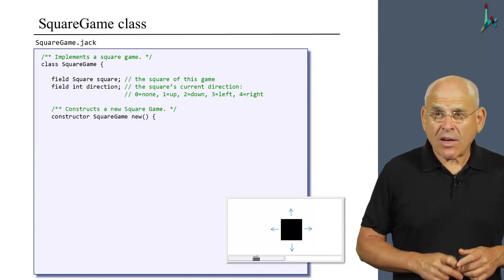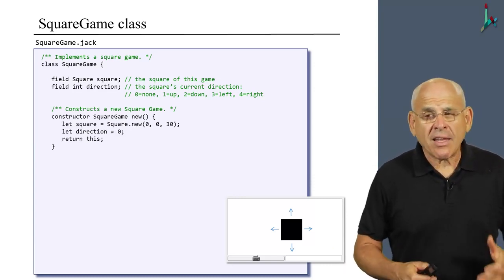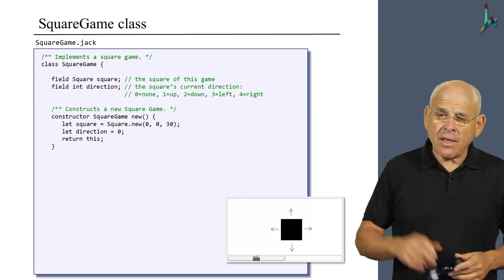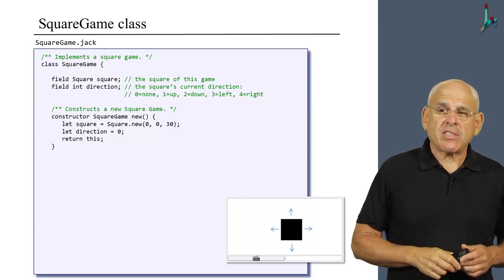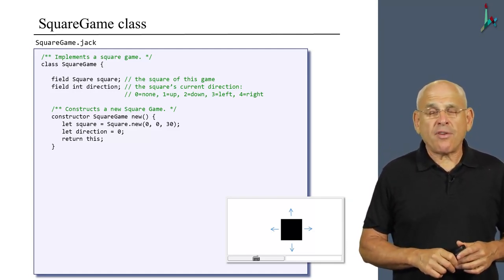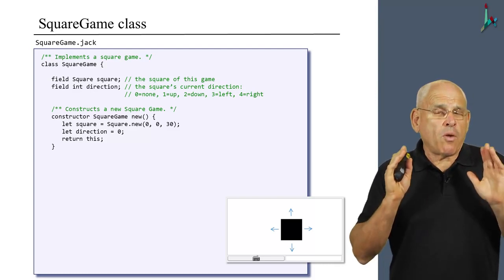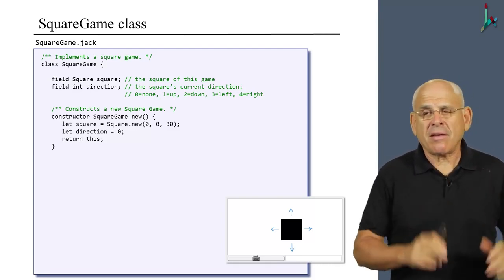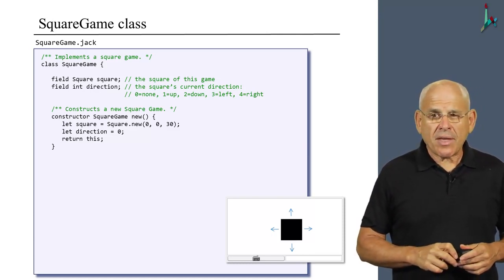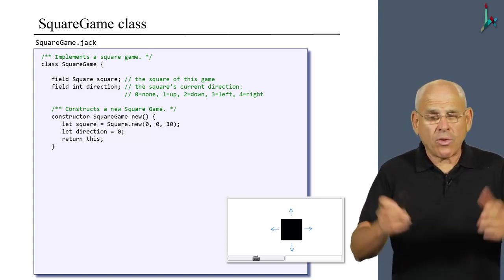Then we have a constructor which creates a new game. Here's the code of the constructor. We start by constructing a new square in the top left corner of the screen. We decided by default the square will begin its life in the size of 30 pixels. Then we set the direction to zero, meaning that at the beginning, we want the square to sit tight in the corner and do nothing until the user decides to start clicking something on the keyboard. Then, as we normally do, we return this, as we normally do in constructors.